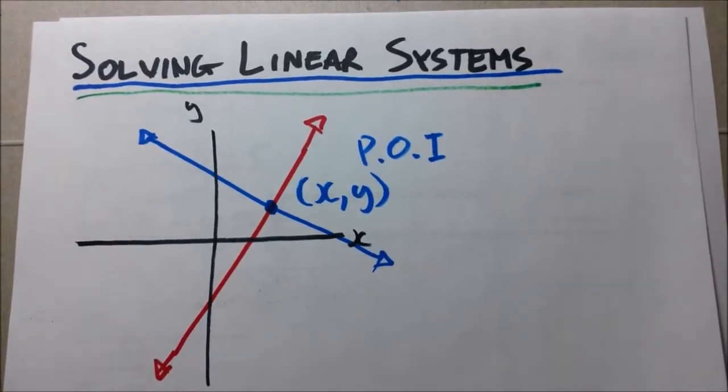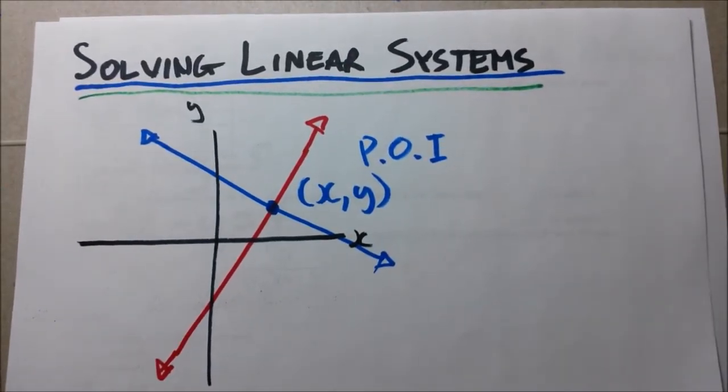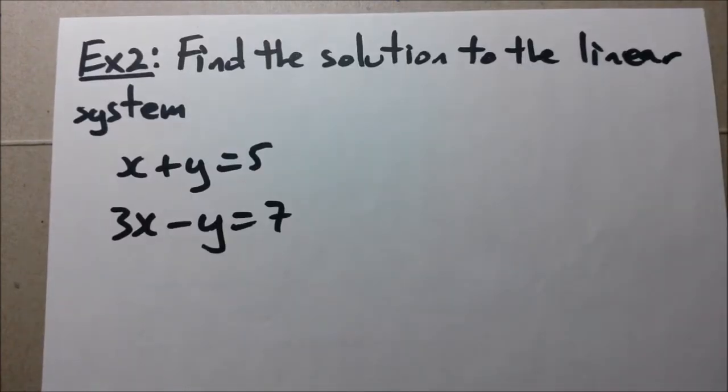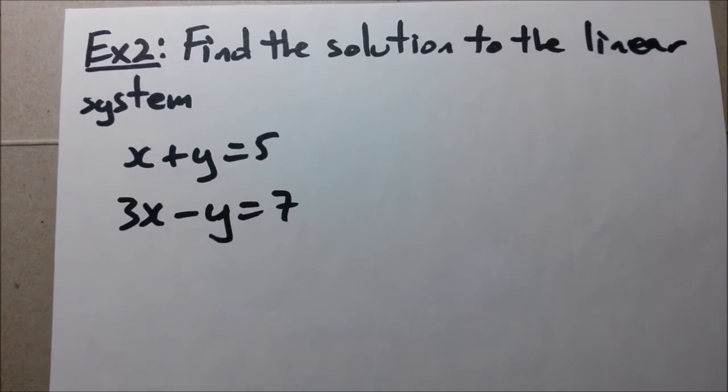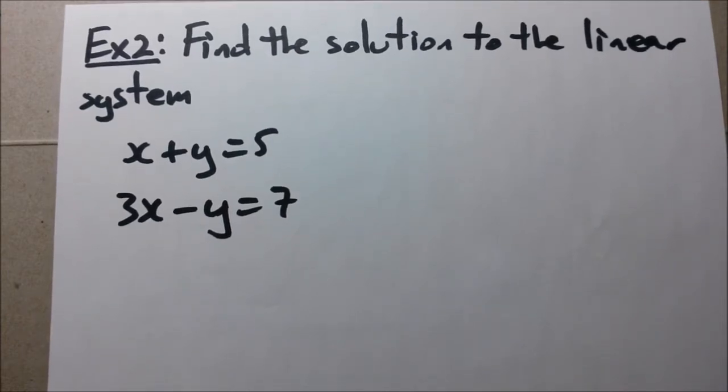Let's look at some more examples of solving linear systems using the substitution method. Example 2. It says find a solution to the following linear system: x plus y equals 5 and 3x minus y equals 7.